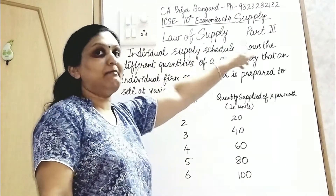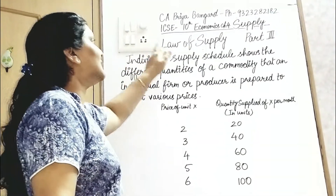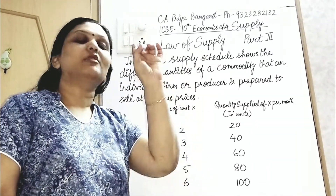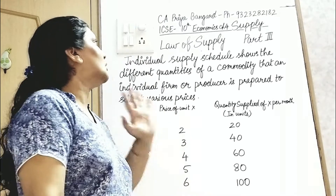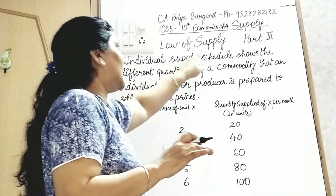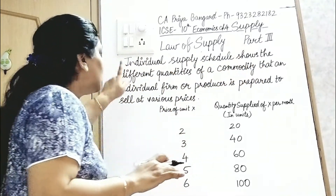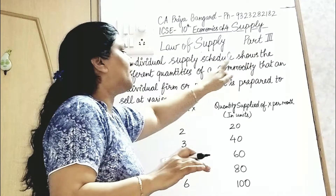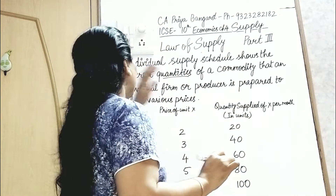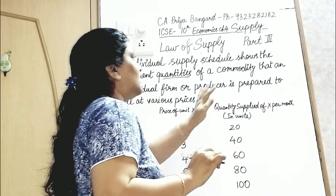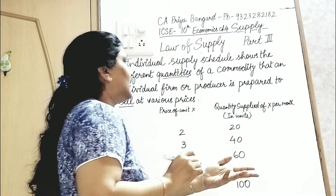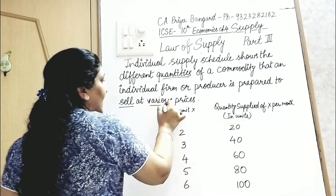Part 3: We are studying the individual supply schedule. Individual means one firm or one producer — uska supply schedule, not the whole market. The individual supply schedule shows the different quantities of a commodity that an individual firm or producer is prepared to sell at various prices.